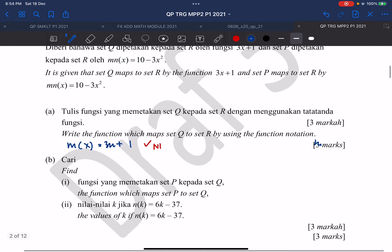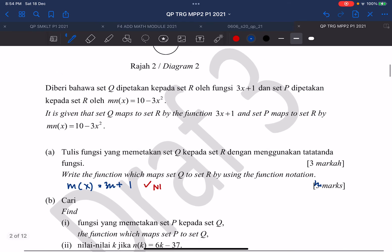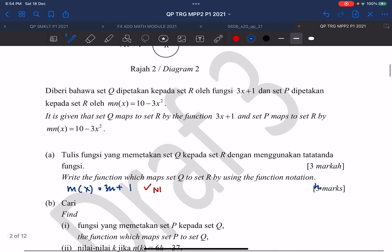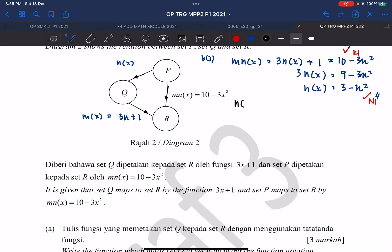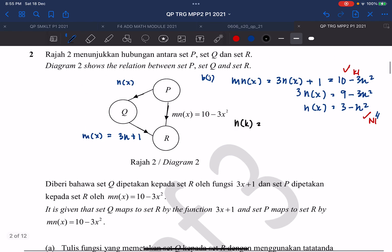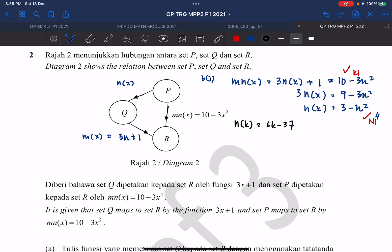For question B2, they want to find the value of k if N(k) equals 6k minus 37. So value of k, N(k) equals 6k minus 37. So they're given us N(k) equals 6k minus 37. So we just sub N inside to our function N, what we obtained in question B. So for question B2, N(k) should be equal to 3 minus k squared, which is equal to 6k minus 37. And we rearrange. We obtain the quadratic equation which is k squared plus 6k minus 40 equals 0.